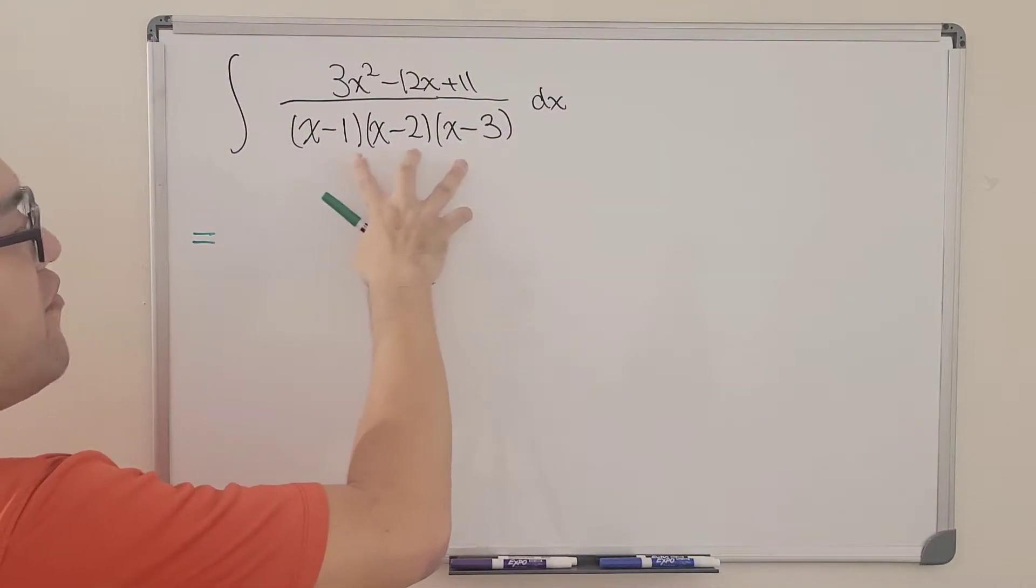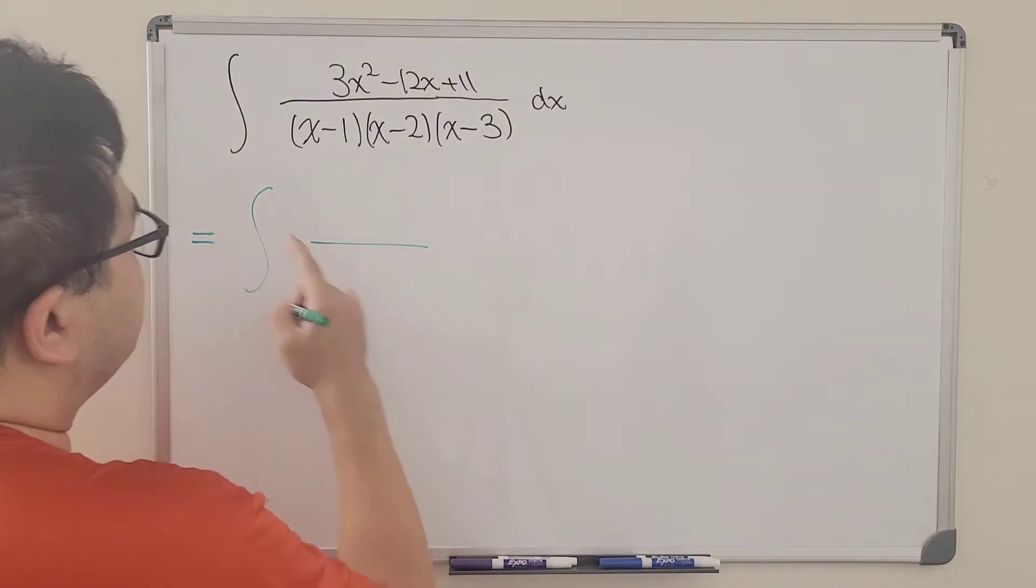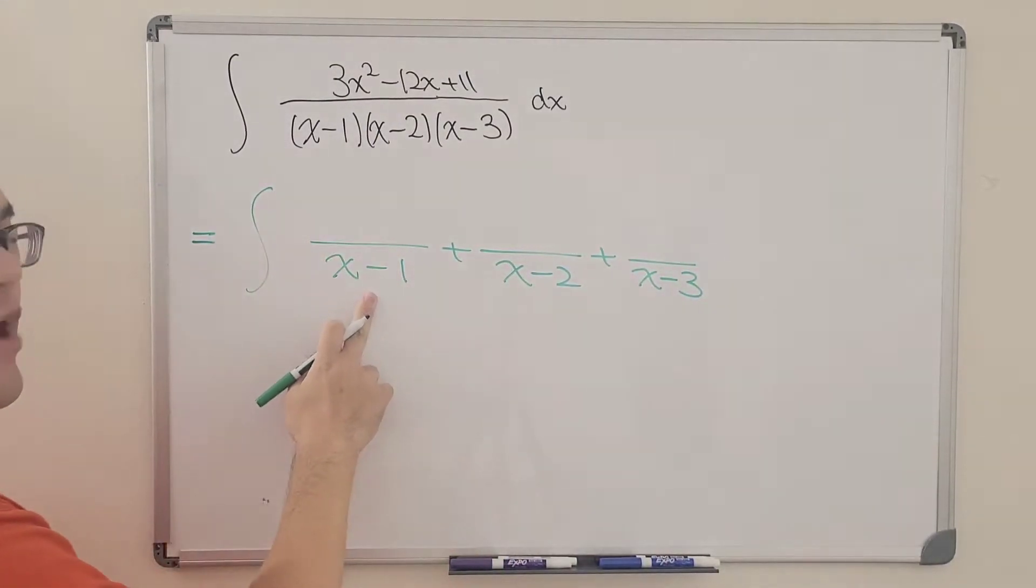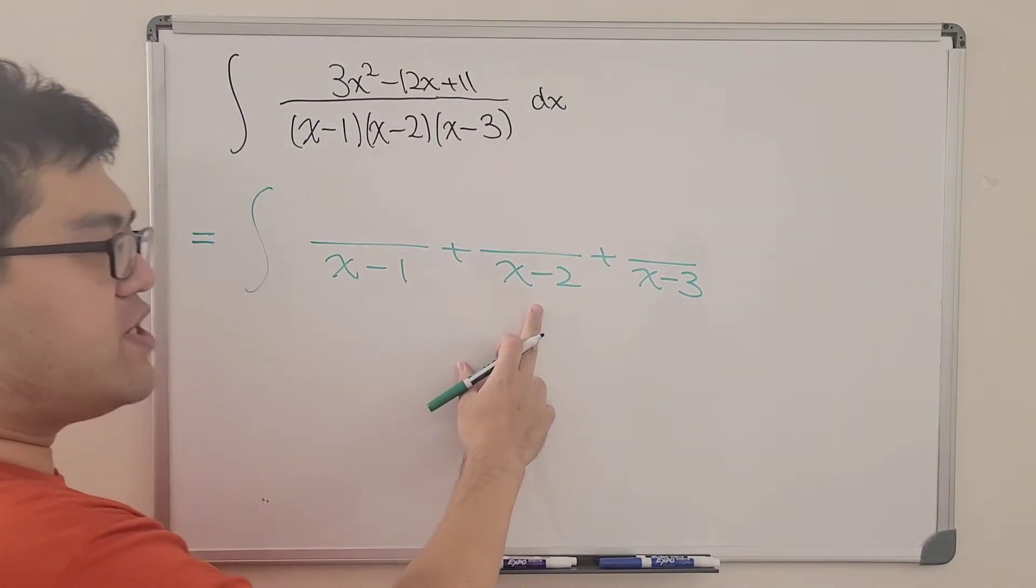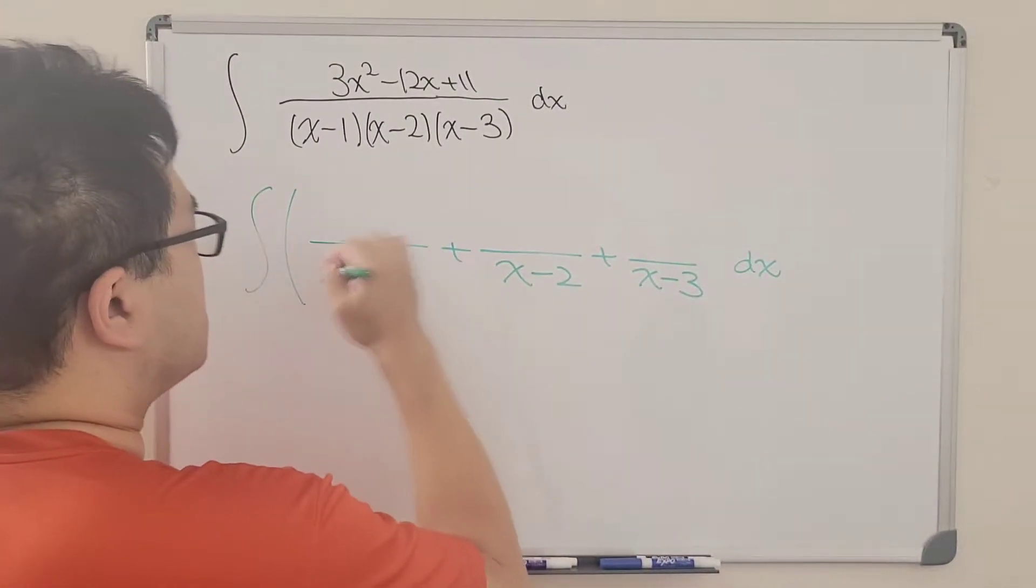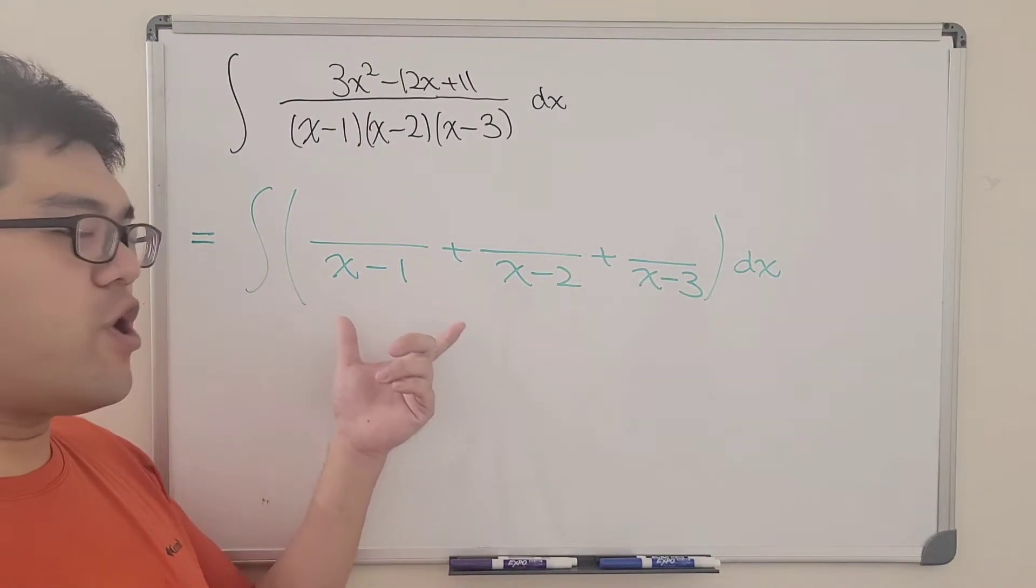So let's jump into our first method. Since in this fraction the denominator has already factored out, our first method is going to do the partial fraction decomposition, which is we're going to break it into three different fractions.